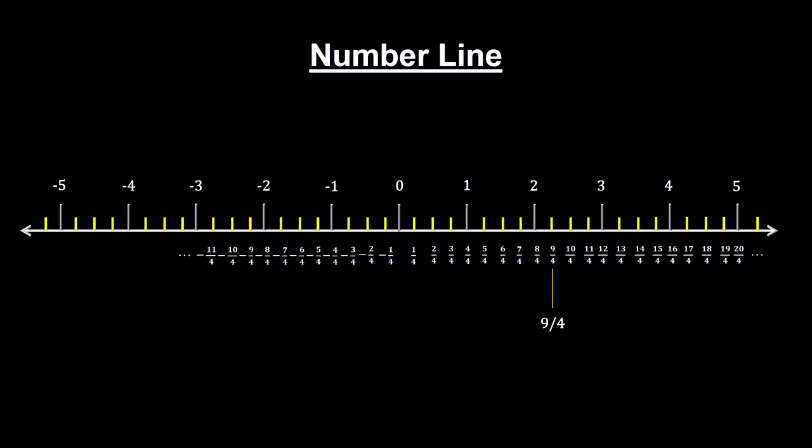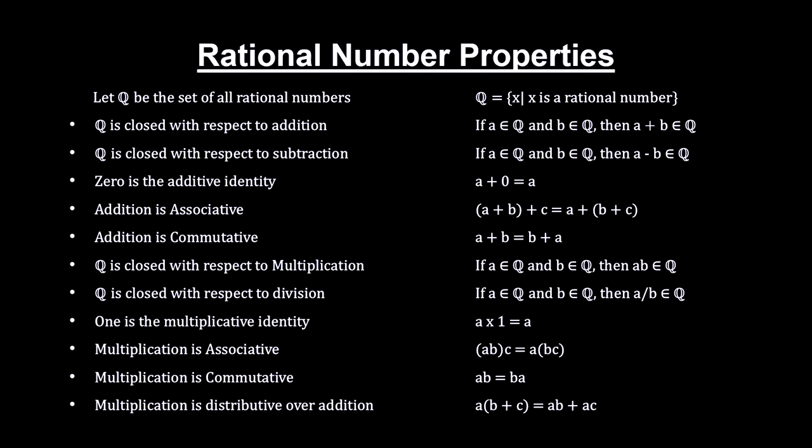For example, here's nine fourths. The line that contains all integers and rational numbers and zero is known as the rational number line. It has all the properties of the integer number line and is closed for all the basic operations.